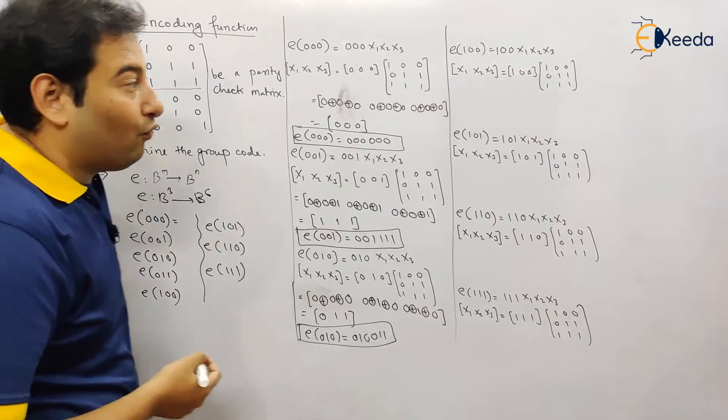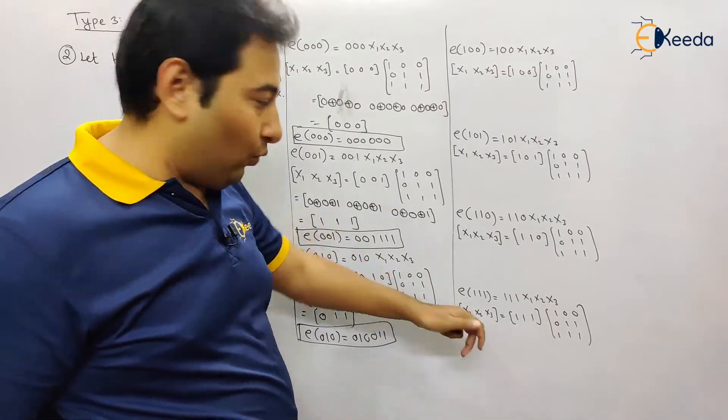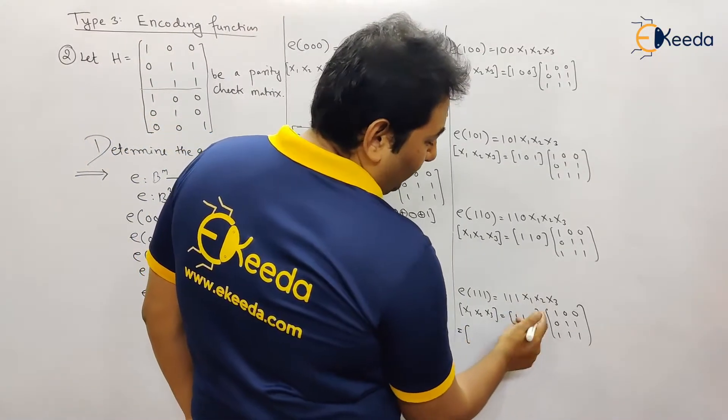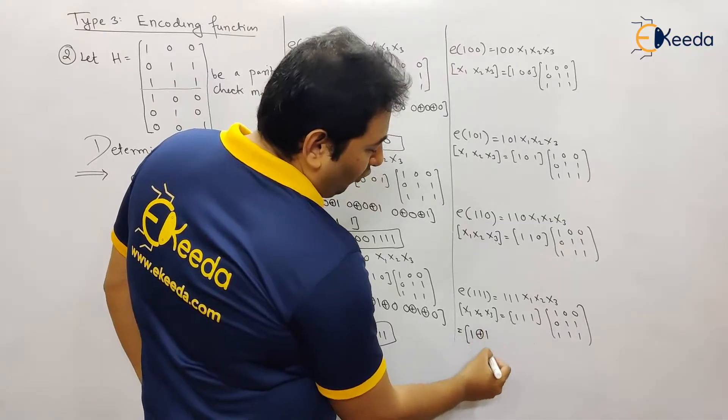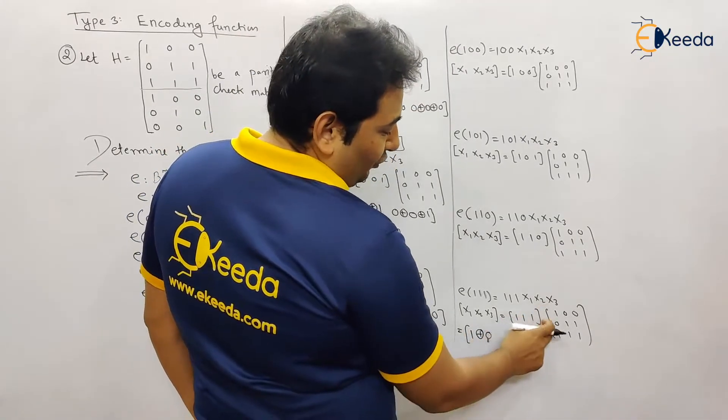Likewise, we'll move on and we'll find the further codes. Let's find out this particular code. That will be equal to, let's multiply with the 1. So that will become 1 XOR 1, sorry, 1, 1, 0 and 1.